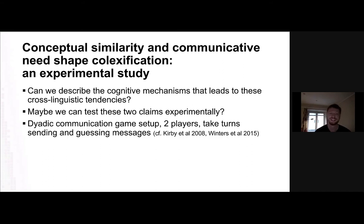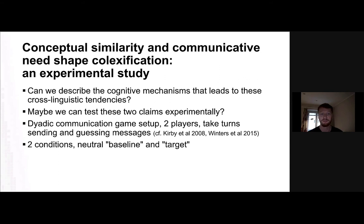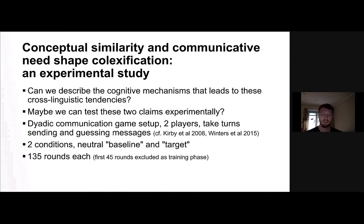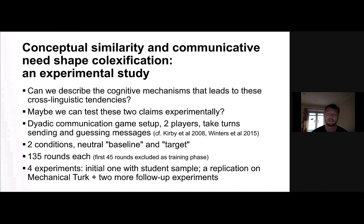And we did. What we constructed is a dyadic communication game setup: two players sending messages to each other, taking turns being sender and receiver, trying to guess what the other is saying and construct a little language. This is something that has been done before — we basically took ideas from previous research. We have two conditions: a neutral baseline and a target condition. The average game takes about half an hour, 135 rounds of sending back and forth. In total we conducted four experiments, including a self-replication.